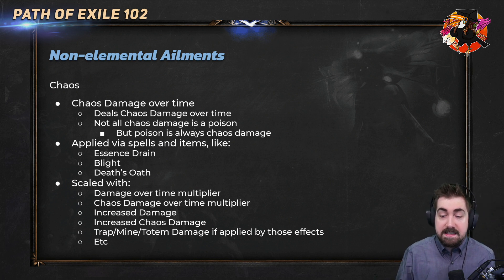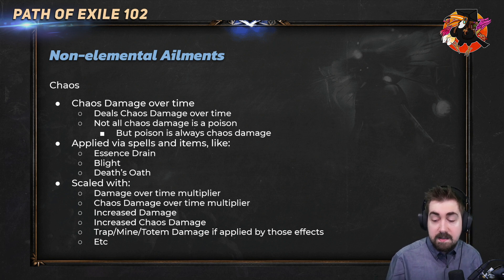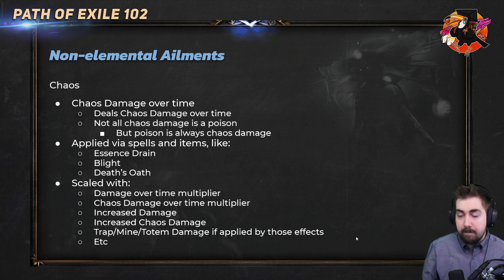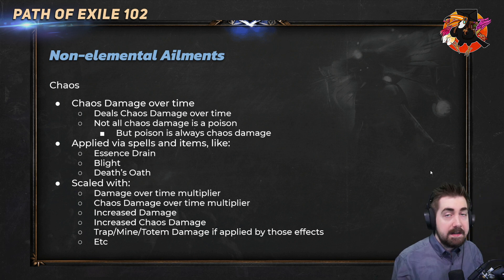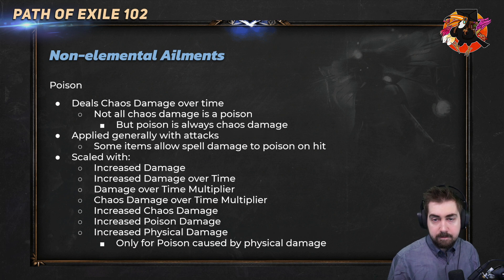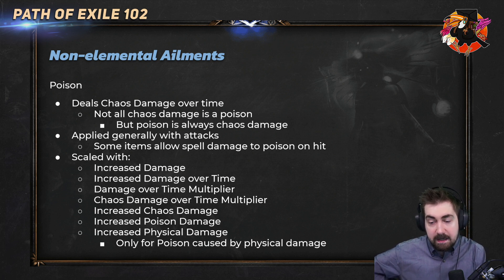For chaos: all poison damage is chaos but not all chaos damage is poison. Chaos damage over time is applied via spells like Essence Drain, Blight, and Death's Oath, and scales with damage over time multiplier globally for every dot, chaos damage over time multiplier, increased damage, and increased chaos damage. Anything that has the word 'multiplier' in it is good — multiplier is always more better. So if it's a choice between 20% more multiplier versus 50% increased damage, the multiplier is generally always better. Poison deals chaos damage over time and is generally applied with attacks, though some items allow spell damage to poison on hit.